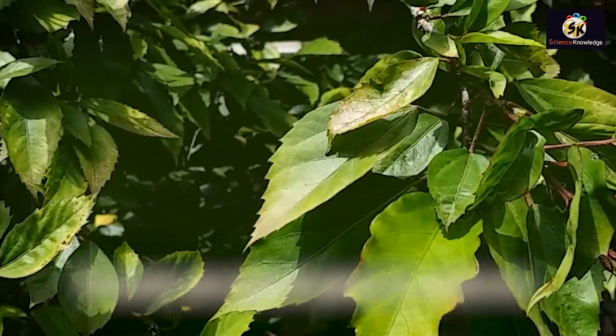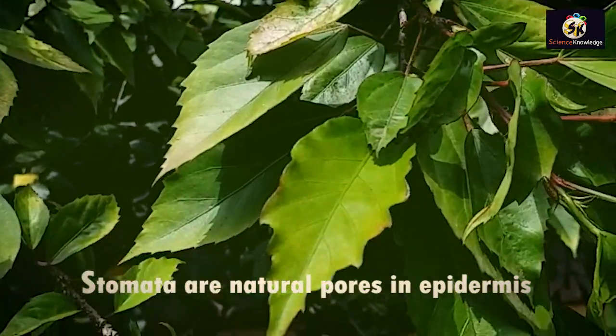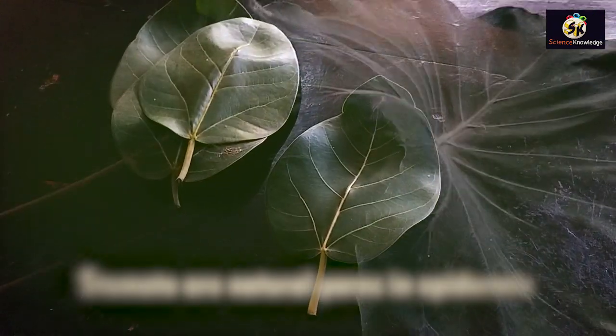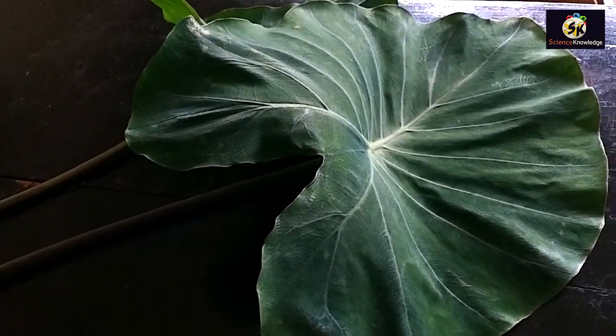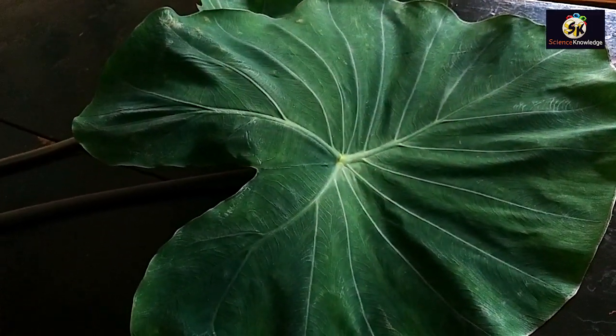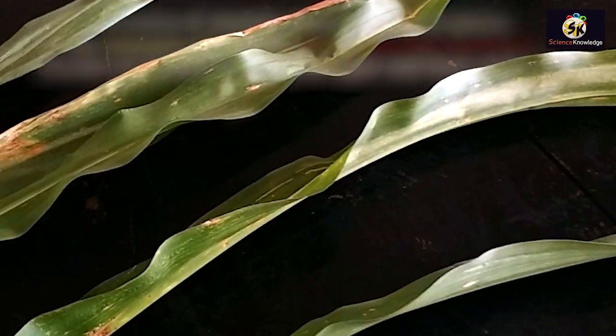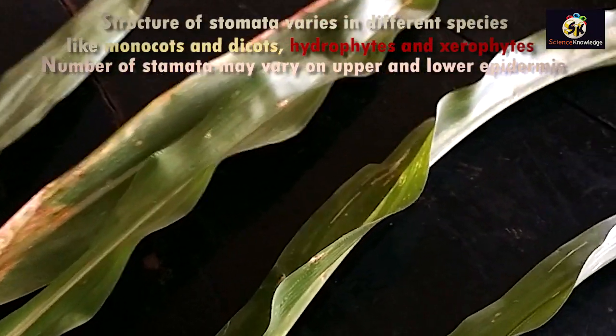Hello friends, the stomata are natural openings or natural pores present on the epidermis of the leaves and the floral parts like sepals and petals. The number of stomata are different in different plants. In monocots the stomata are dumbbell shaped, whereas in dicots the stomata are kidney shaped.